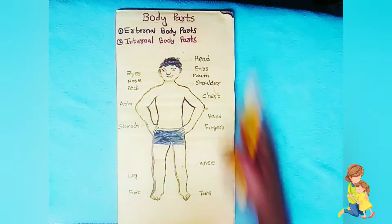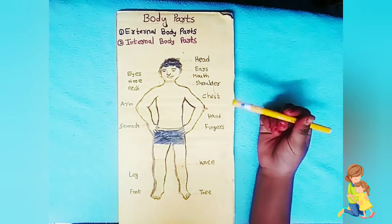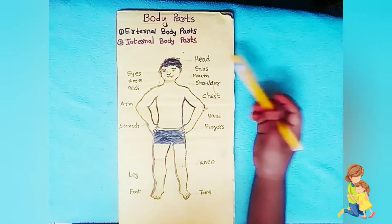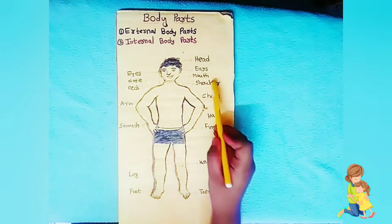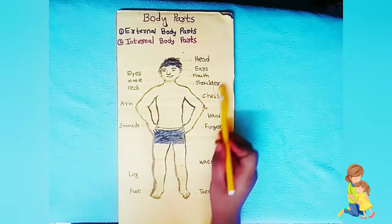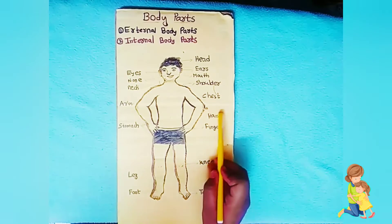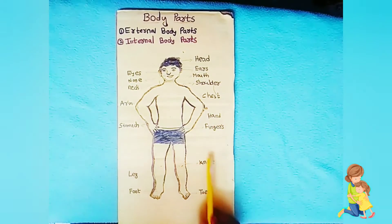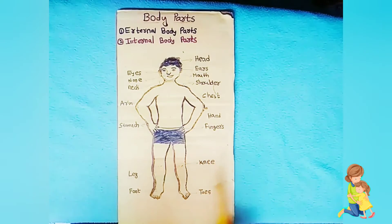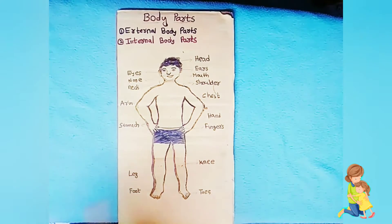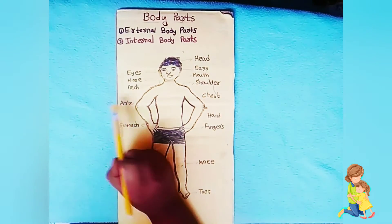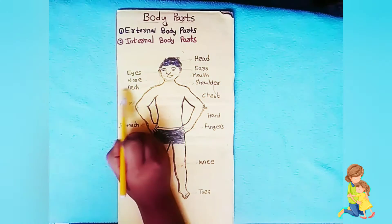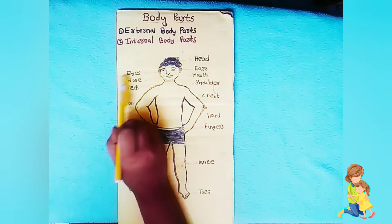These are external body parts: head, ears, mouth, shoulder, chest, hand, fingers, knee, toes, foot, legs, stomach, arm, neck, nose, eyes.